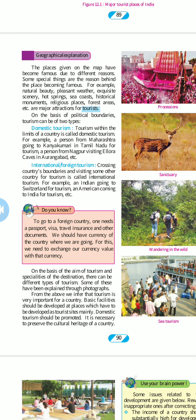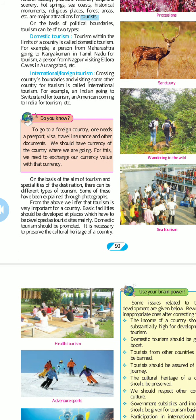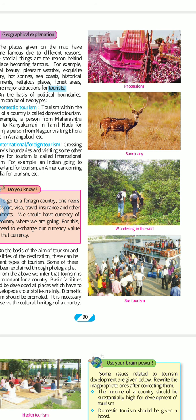Crossing a country's boundary and visiting some other country for tourism is called international tourism or foreign tourism. For example, an Indian going to Switzerland for tourism, or an American coming to India for tourism. So if we Indians cross India's border — even going to Pakistan or Sri Lanka — that counts as international or foreign tourism.